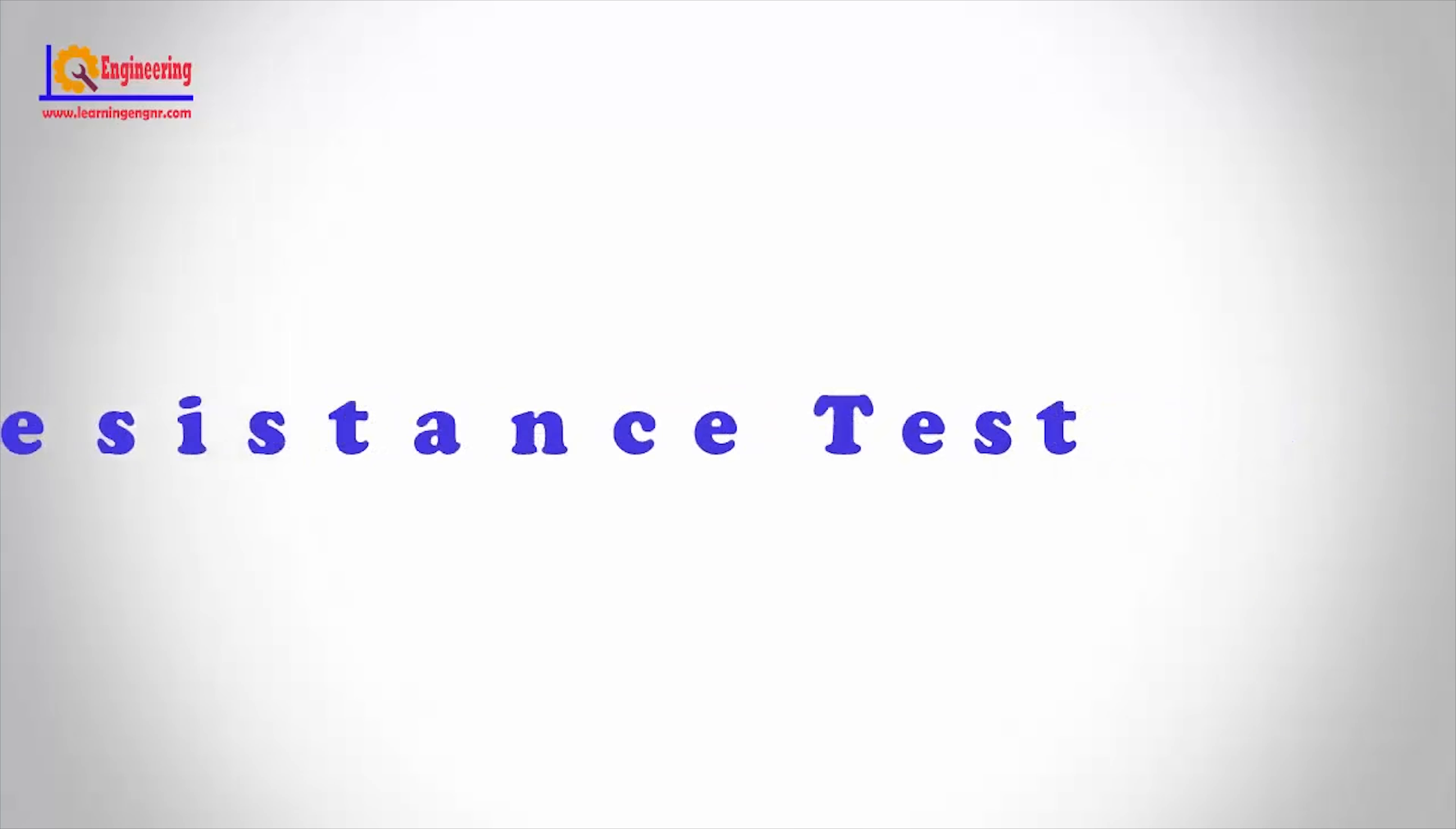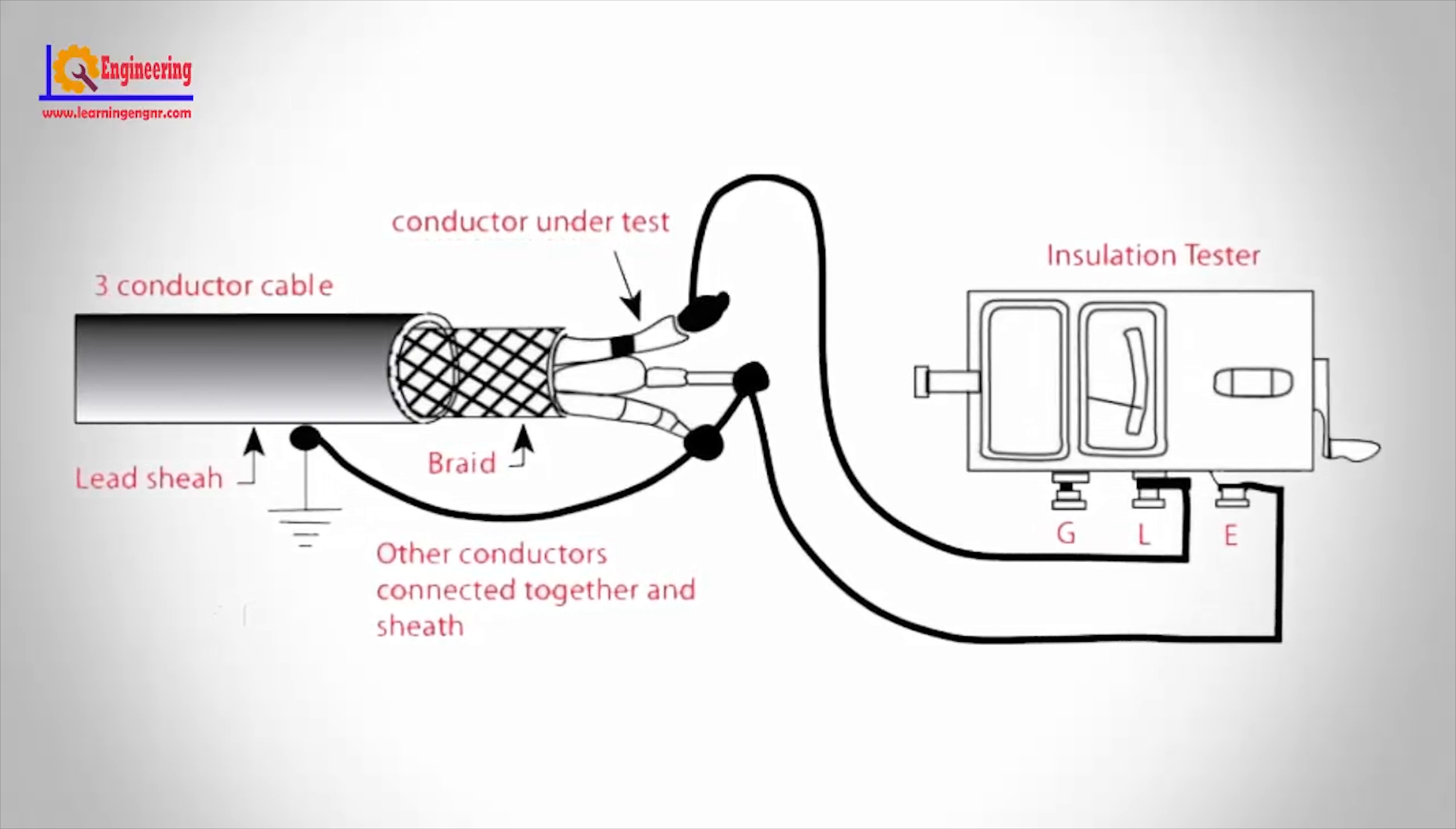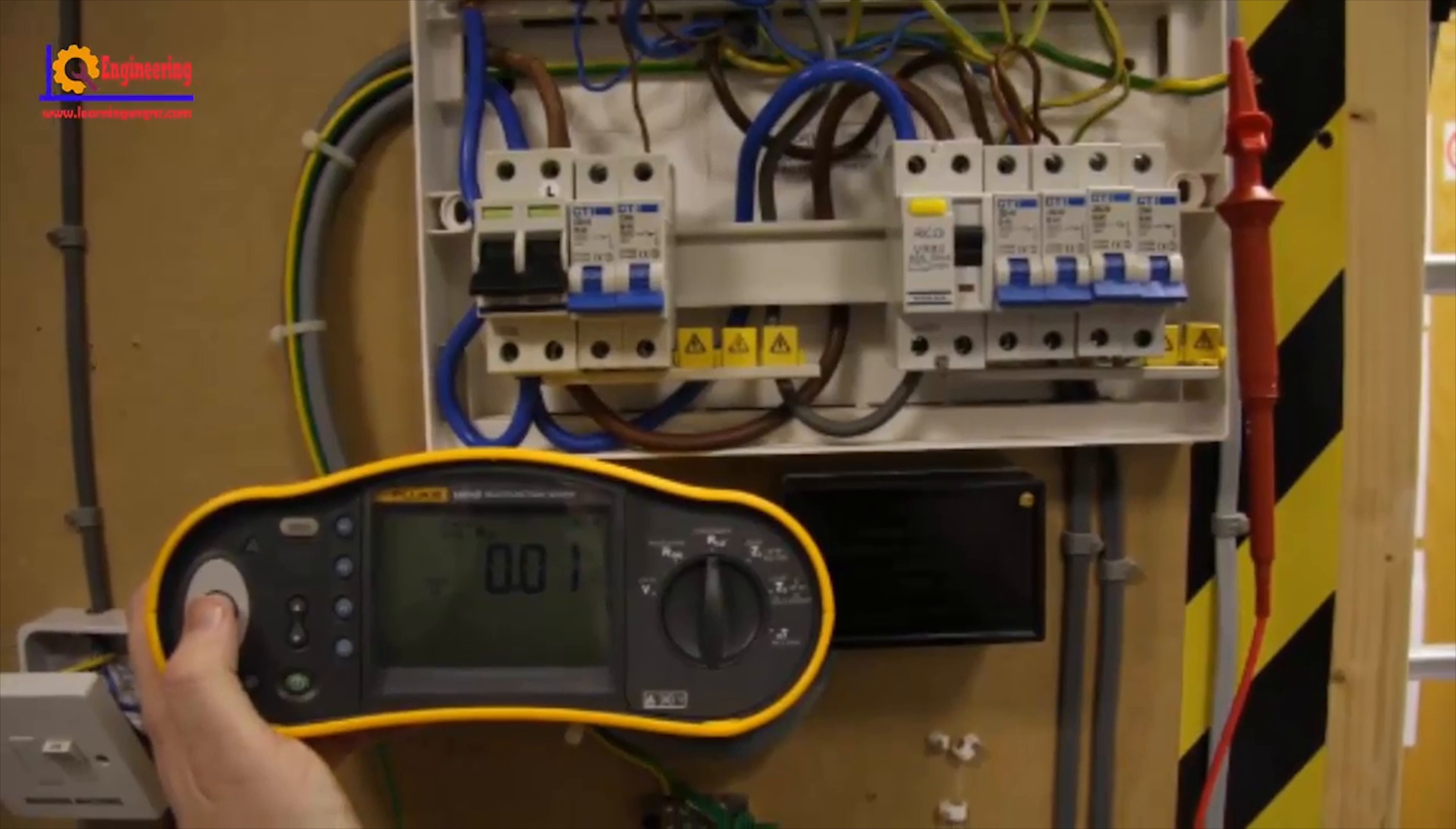Insulation Resistance Test. This test is to measure the total resistance of a product's insulation by applying a voltage of 500V to 1000V for low voltage systems.